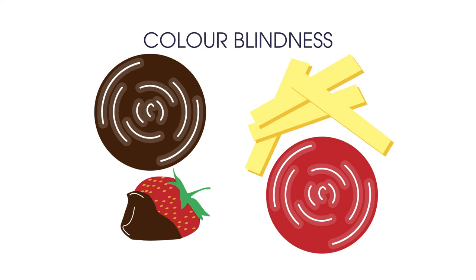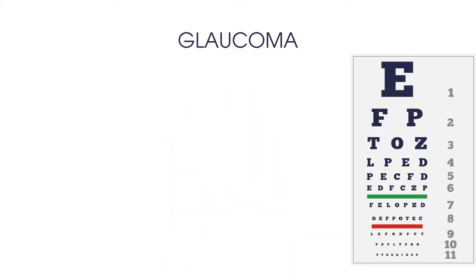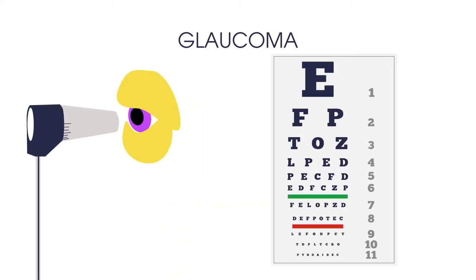The second eye condition we're going to discuss is glaucoma. This is where your optic nerve is damaged by the pressure of the fluid inside your eye. Most types of glaucoma have no symptoms, so a regular eye test is the only way to know you have the condition. It can lead to blindness if left untreated.